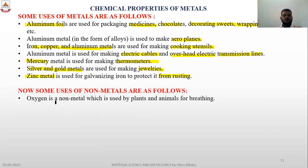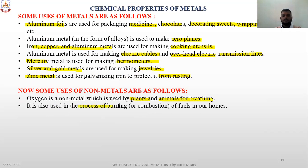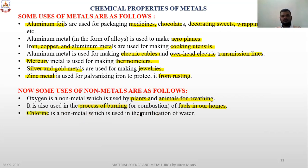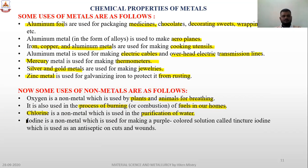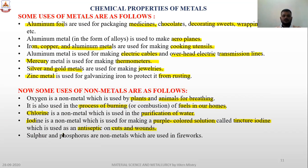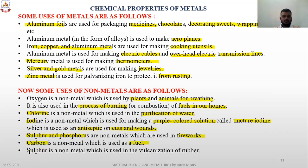Some uses of non-metals: oxygen is used by plants and animals for breathing and for burning fuel. Chlorine is used for purification of water. Iodine is used for making a purple-colored solution called tincture iodine, used as an antiseptic on cuts and wounds. Sulfur and phosphorus are used in fireworks for producing heat and coloring. Carbon is used as a fuel. Sulfur is also used in vulcanization of rubber. These are the basic details of metals and non-metals, and we will look further in the next lectures.